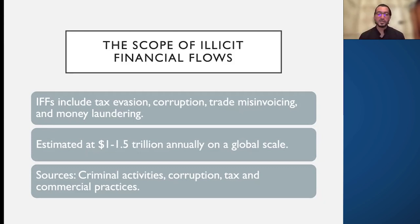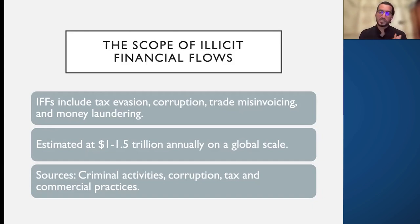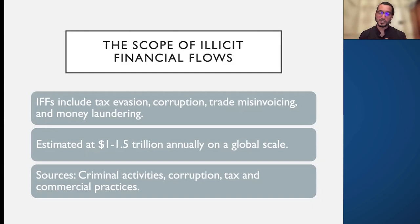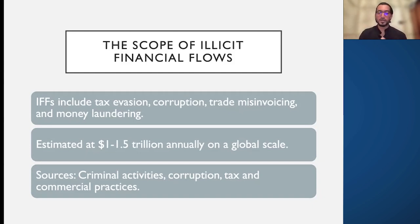Estimated globally, illicit flows amount to $1 to $1.5 trillion annually. The sources include criminal activities, corruption in the country, and tax and other commercial practices — all of which factor into illicit financial flows.